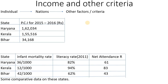Per capita income: 1,62,034 in Kerala; 1,55,516 in another state; and 34,168 in Bihar. Now, if we compare these three states, what is the developed state?